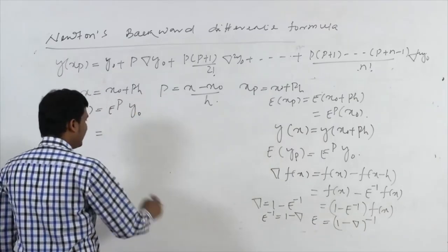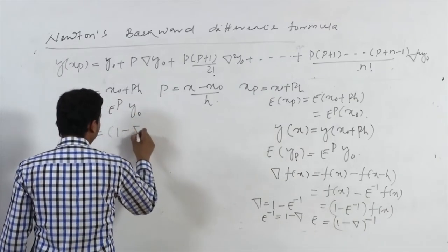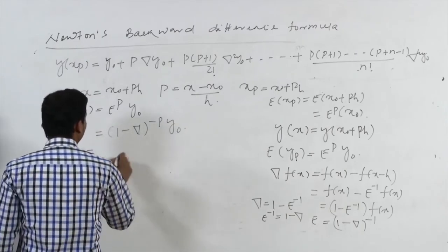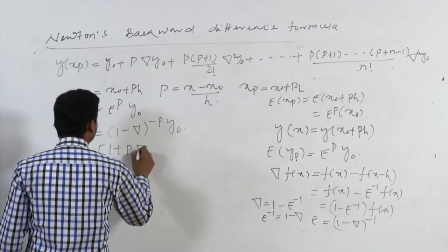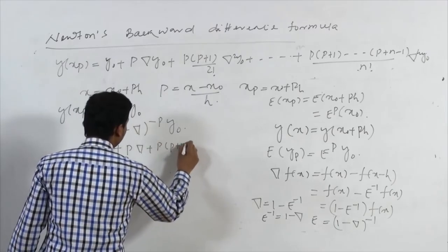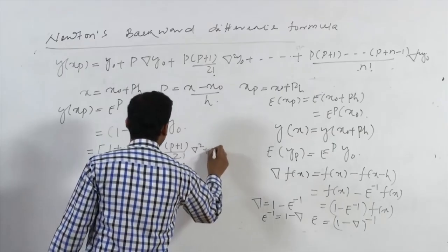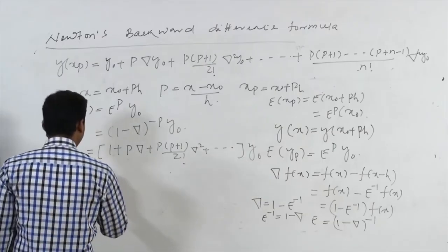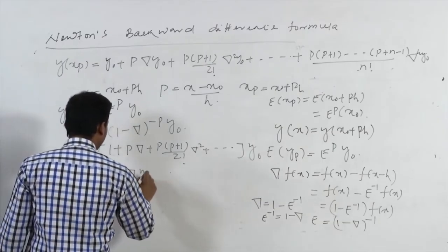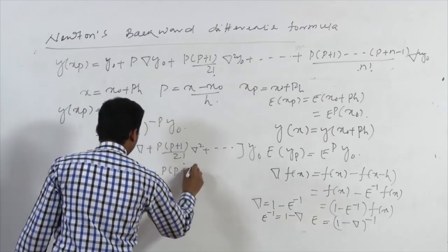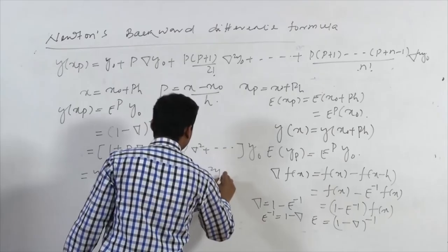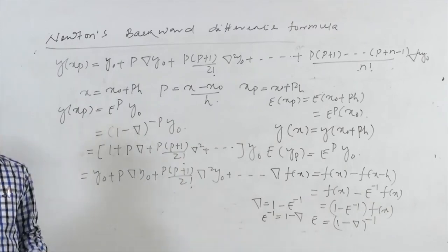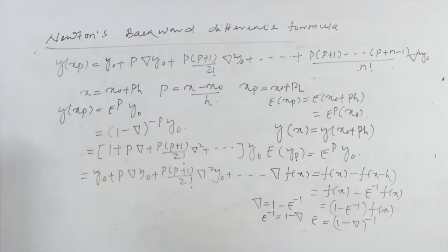Expanding (1 − nabla)^(−P) gives: 1 + P·∇ + P(P+1)/2! · ∇² + …, operated on Y0. So in combined form: Y0 + P·∇Y0 + P(P+1)/2! · ∇²Y0 + this continues. This is the representation for Newton's backward difference formula.